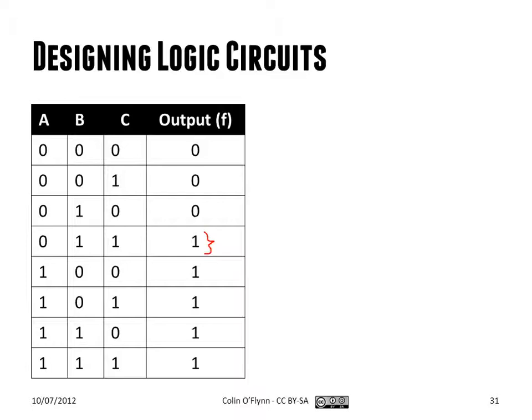For example, if we have this line where A is 0, B is 1, C is 1, the minterm for this line would be the complement of A, because it's 0, ANDed with B, ANDed with C. This minterm for this particular line will only be 1 for that specific combination of input variables. If B is 0, this will be 0 and the whole thing is 0.